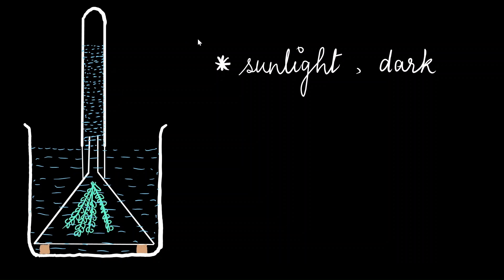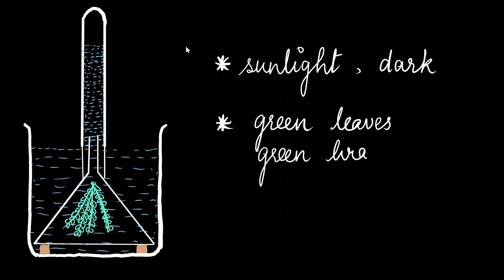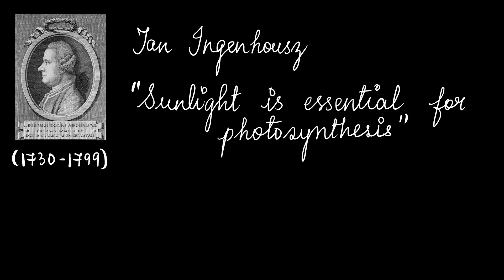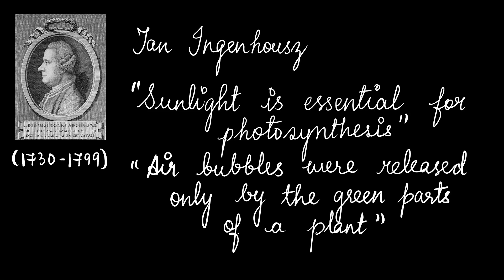He also changed the sample inside the water, using green leaves, green branches, as well as non-green parts of the plant. He noticed that bubbles were coming out, but observed that the bubbles emerged only in the setup kept in sunlight and when green leaves and green branches were used. He later identified these bubbles to be oxygen. Thus, he established the importance of sunlight in photosynthesis and showed that the oxygen bubbles released came only from the green parts of the plant.